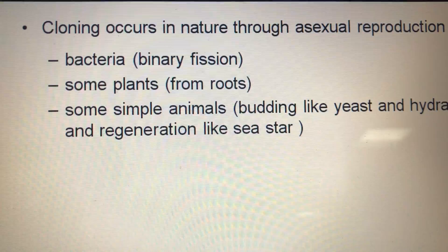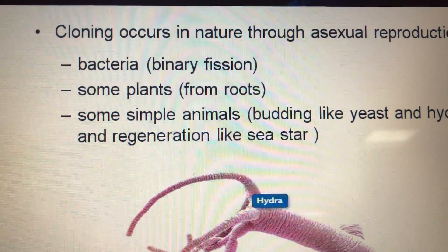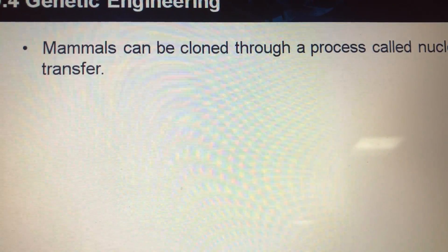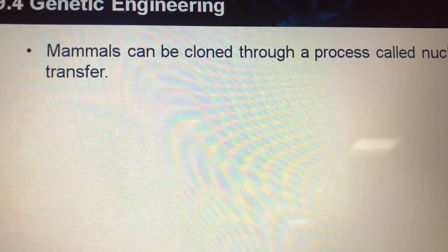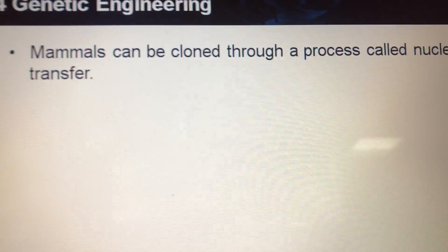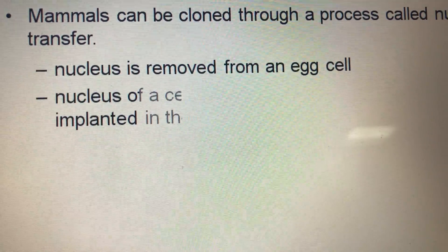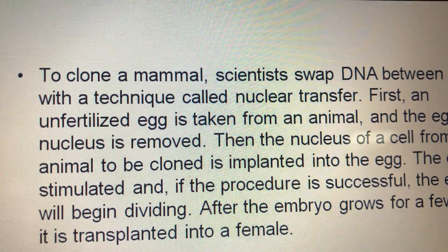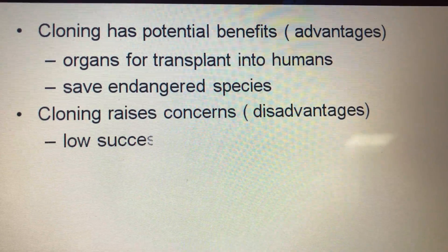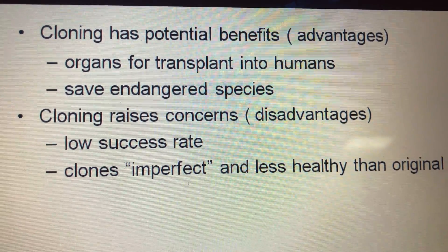Cloning occurs in nature through asexual reproduction, like bacteria. However, cloning cannot happen with mammals unless by using a process called nuclear transfer.